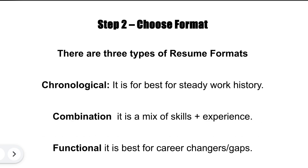Here is Step 2: choose format. There are three formats in which a resume can be written. The first is chronological, which is commonly used and best for steady work history. Then comes the combination format, which is a mix of skills plus experience. And finally, functional, which is best for professionals who change careers frequently or have gaps in their careers.